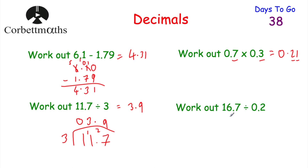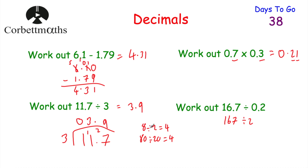The last question is 16.7 divided by 0.2. Dividing by a decimal is trickier, so multiply both numbers by 10 to get 167 divided by 2 — the answer stays the same. Half of 160 is 80 and half of 7 is 3.5, so it's 83.5. The answer is 83.5.